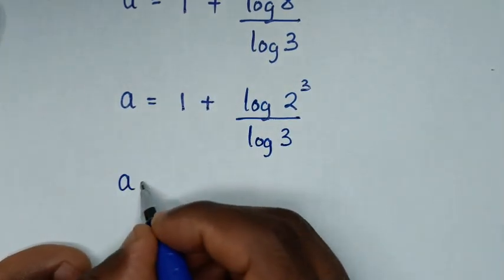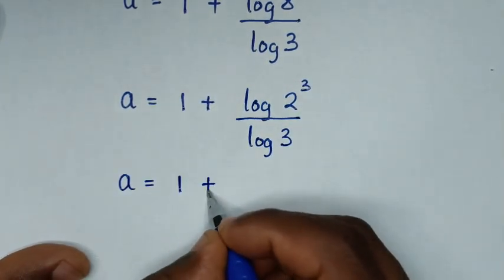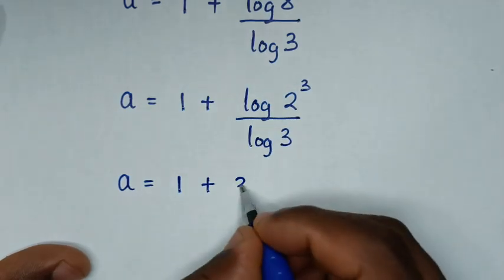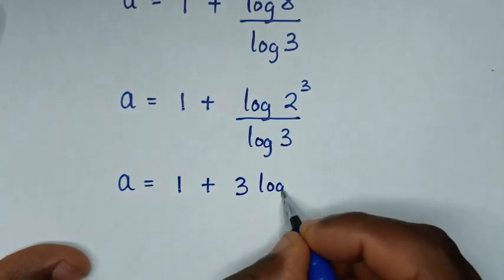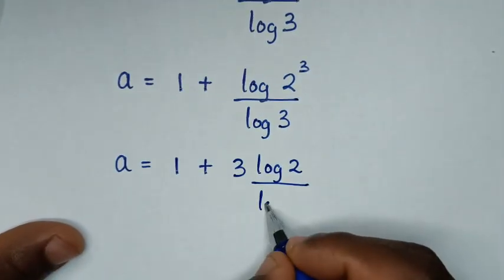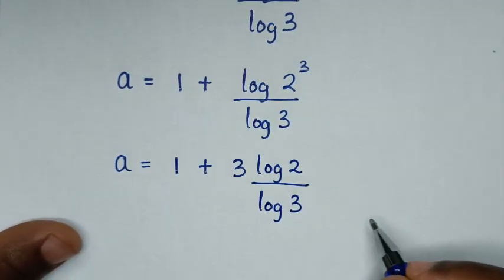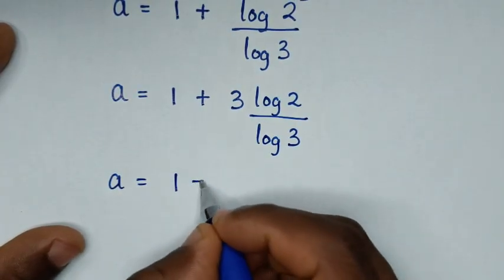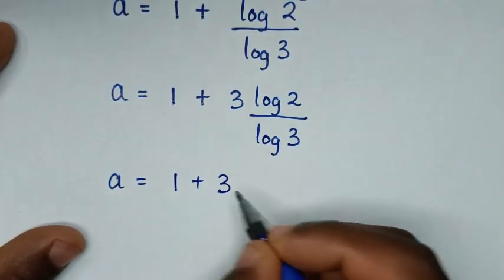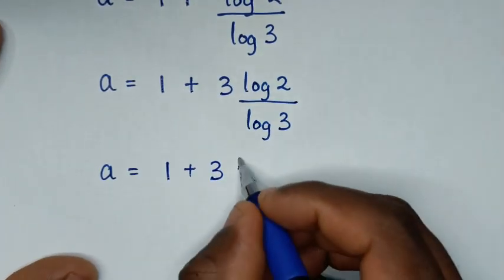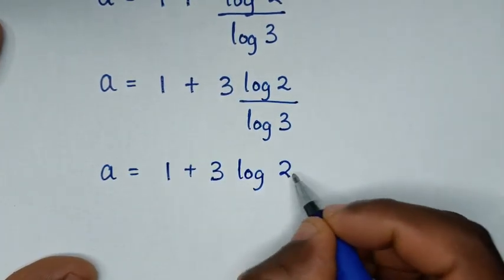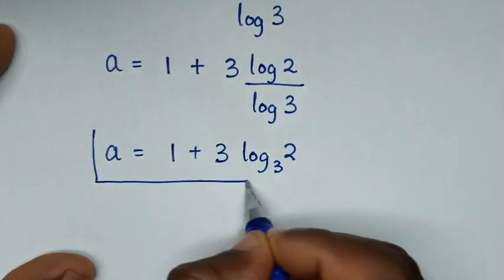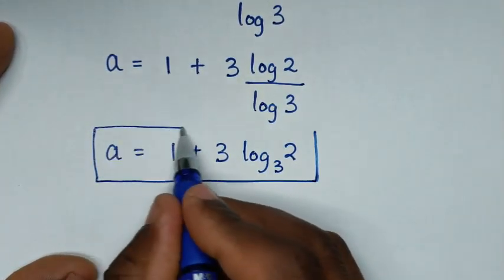So it will be a is equal to 1 plus log of 2^3 over log of 3, which simplifies to 1 plus 3 times log of 2 over log of 3. And log of 2 over log of 3 is the same as log base 3 of 2. So this is the final answer: a equals 1 plus 3 log base 3 of 2.